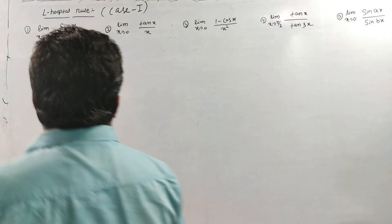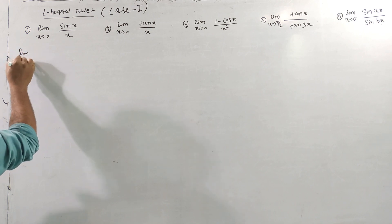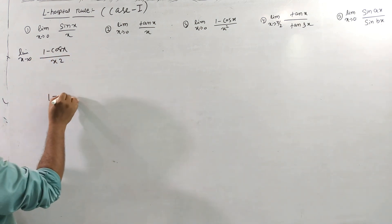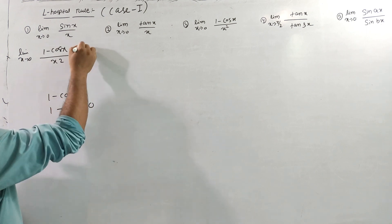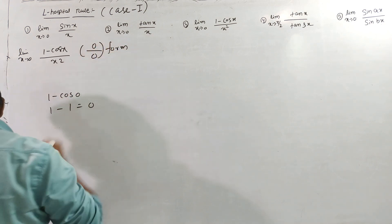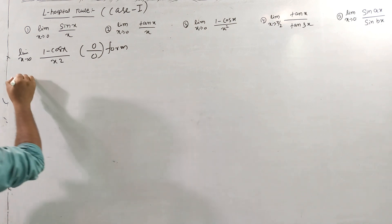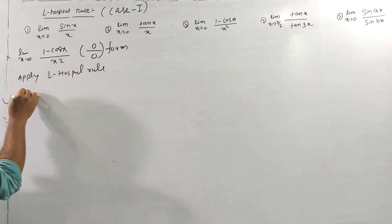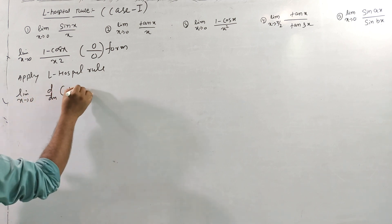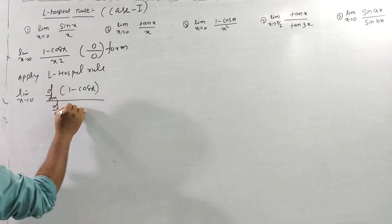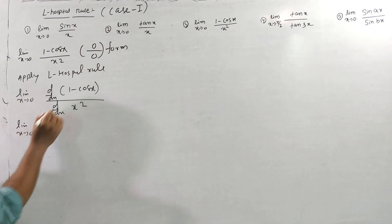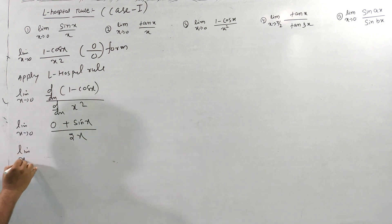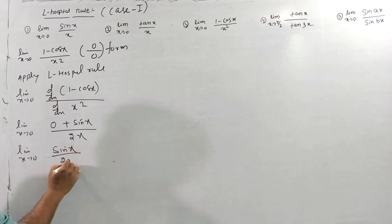Question number 3: limit x tends to 0 of (1 - cos x)/x². Substituting x = 0: 1 - cos(0) = 0/0. Apply L'Hôpital's rule: limit x tends to 0, derivative of (1 - cos x) is sin(x), and derivative of x² is 2x. So we get: limit x tends to 0 of sin(x)/2x.